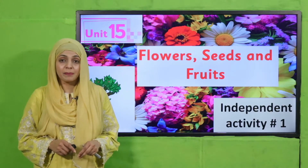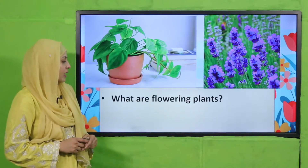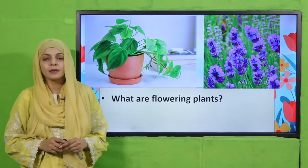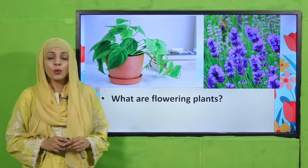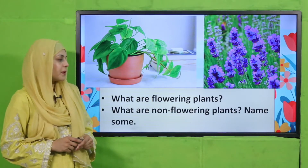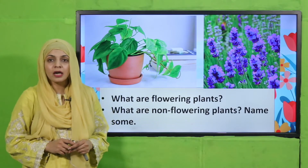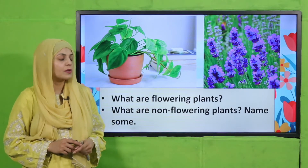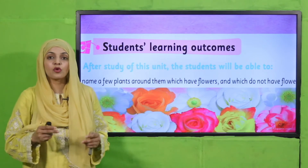Today we are going to perform an independent activity. Before that, let's quickly recap what we did in the previous lecture. Look at the pictures very carefully and tell me: what are flowering plants? Flowering plants are those which bear flowers. What are non-flowering plants? Non-flowering plants are those which do not have flowers. Some examples are ferns and mosses.